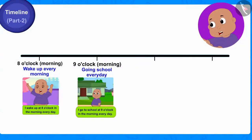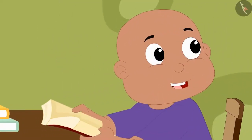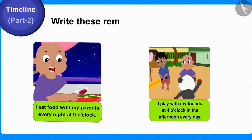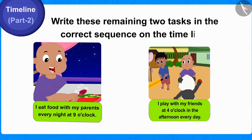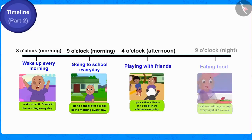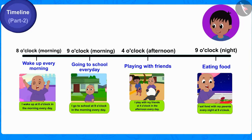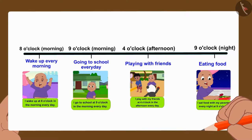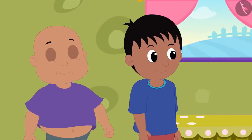Babalu got excited seeing Raju's picture. It looks so much prettier than the daily routine I had written. Children, now can you write these remaining two tasks in the correct sequence on the timeline? If you wish, you can stop the video and find the answer. Well done children, you have written it correctly. Raju completed the timeline in Babalu's diary by drawing beautiful pictures and writing the time in the correct order. Babalu thanked Raju for teaching him to write his daily routine using the timeline beautifully, and then both went to the play park.